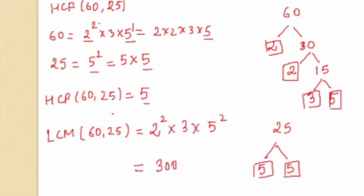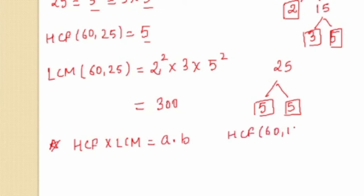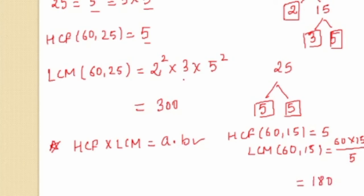We'll do many practice questions in the next video. For now, understand that the Fundamental Theorem of Arithmetic helps us find HCF and LCM. More importantly, when you know the HCF and LCM of two numbers, their product equals the product of the two numbers. For example, if HCF of 60 and 15 is 5 and you need the LCM, simply compute (60 × 15) ÷ 5 = 180. You can use this formula to find HCF given LCM, or vice versa.